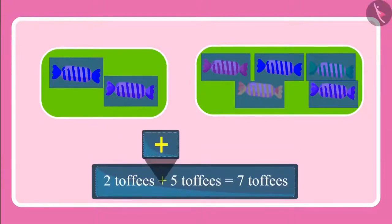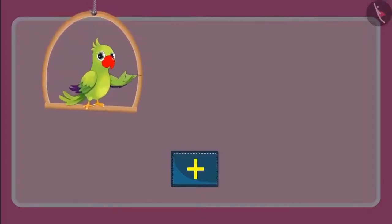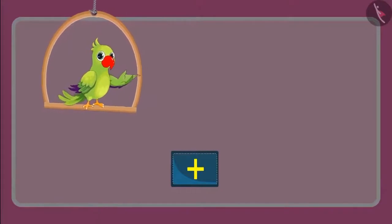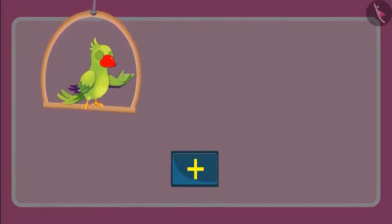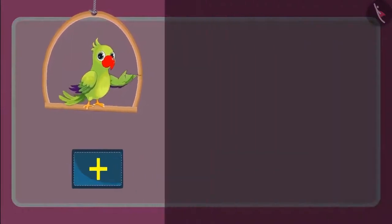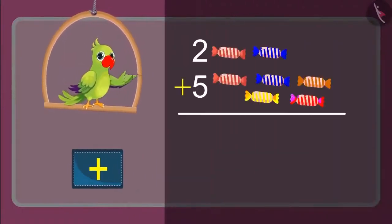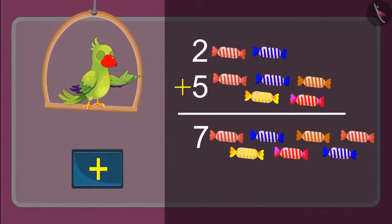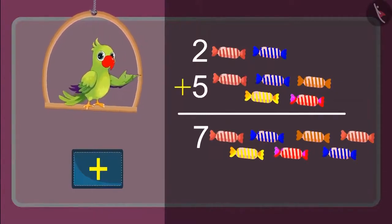Children, do you know what symbol this is? Yes, this is the symbol of addition. We can write it in one more way. This means when we added five toffees to two toffees, we got seven toffees. You also got the same answer, right? Excellent!